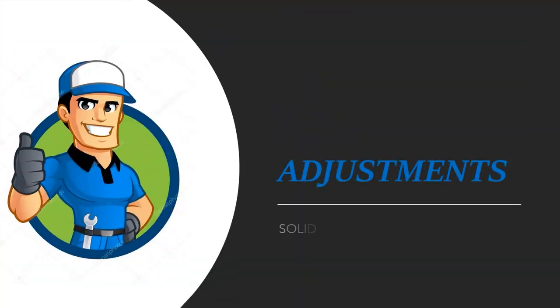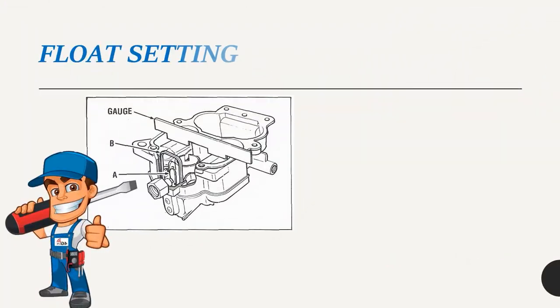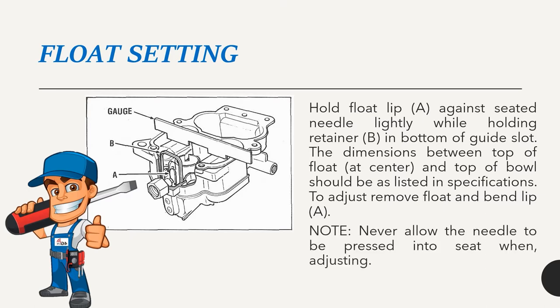Adjustments — Solid Fuel Design. Float setting: Hold float lip against seated needle lightly while holding retainer in bottom of guide slot. The dimension between top of float at center and top of bowl should be as listed in specifications. To adjust, remove float and bend lip. Never allow the needle to be pressed into seat when adjusting.